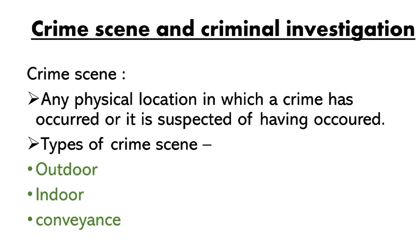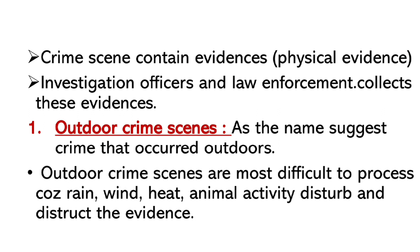What are the types of crime scenes? There are three types: 1. Outdoor, 2. Indoor, and 3. Conveyance. There are also two important bullet points for crime scenes: first, outdoor and indoor crime scenes, and second, what a crime scene contains — evidence.